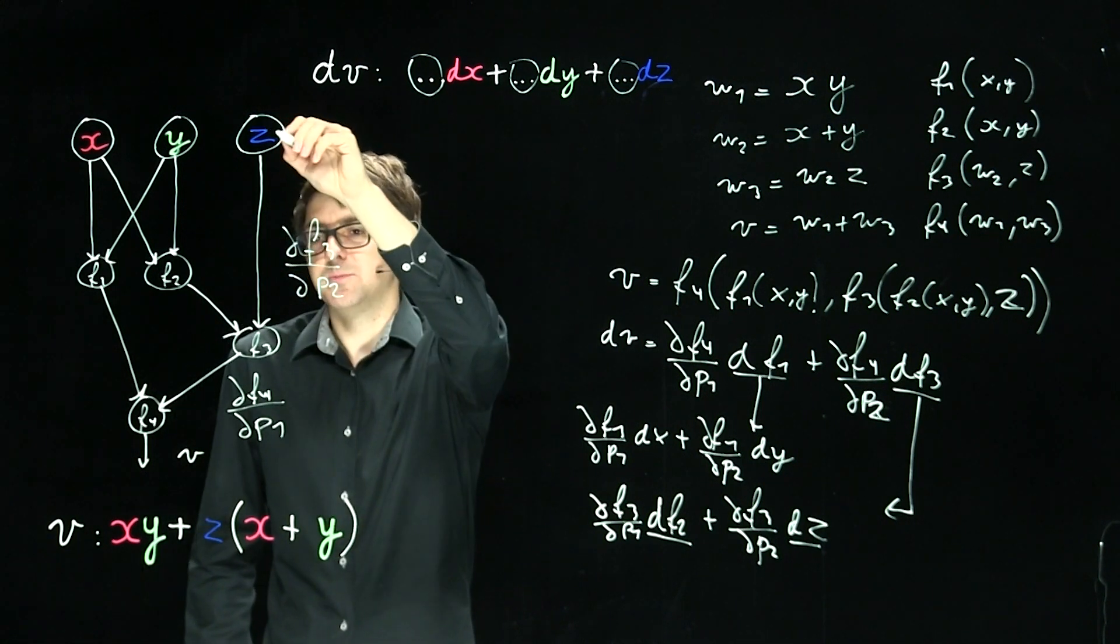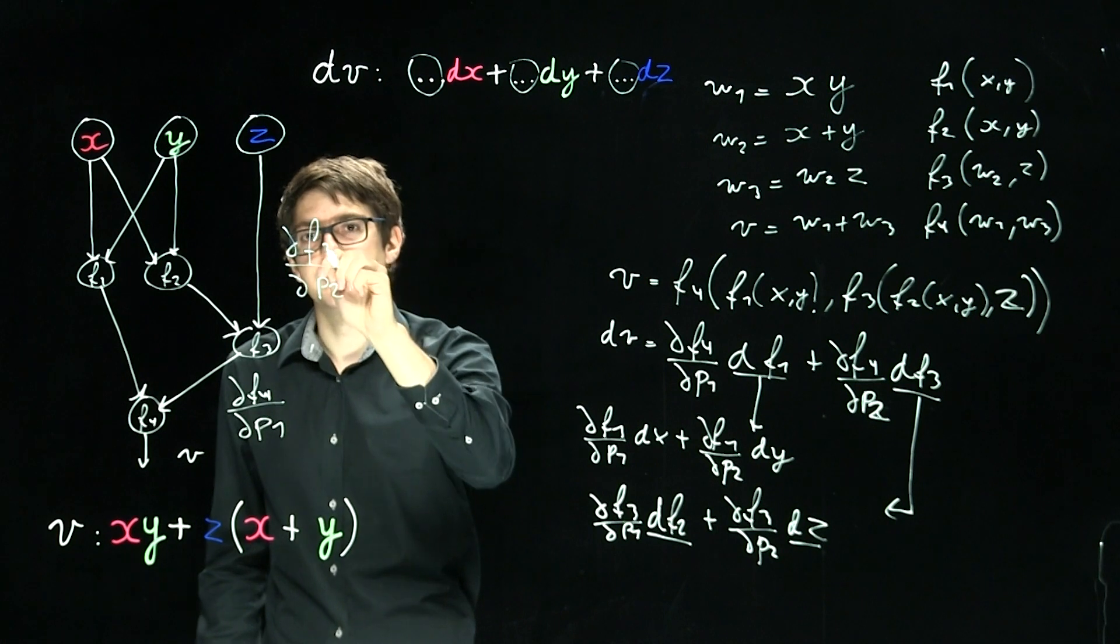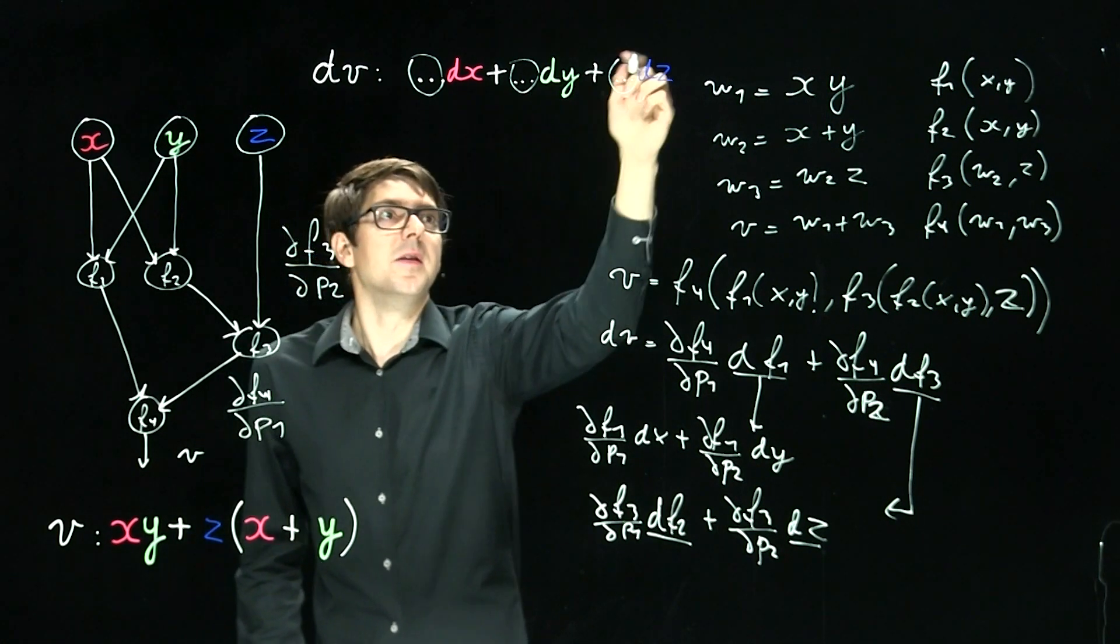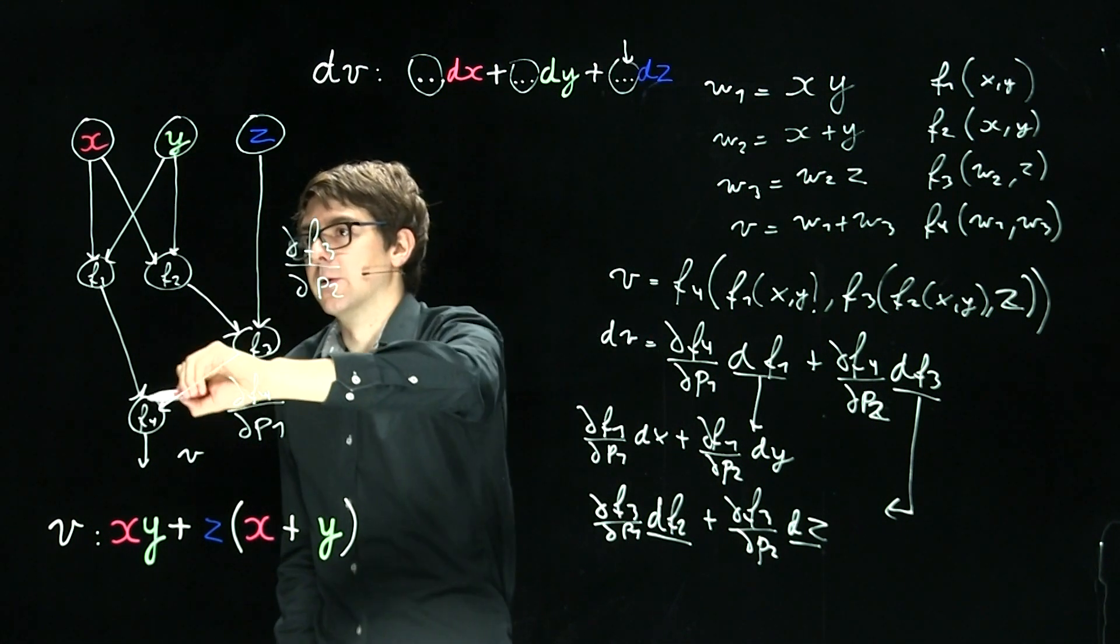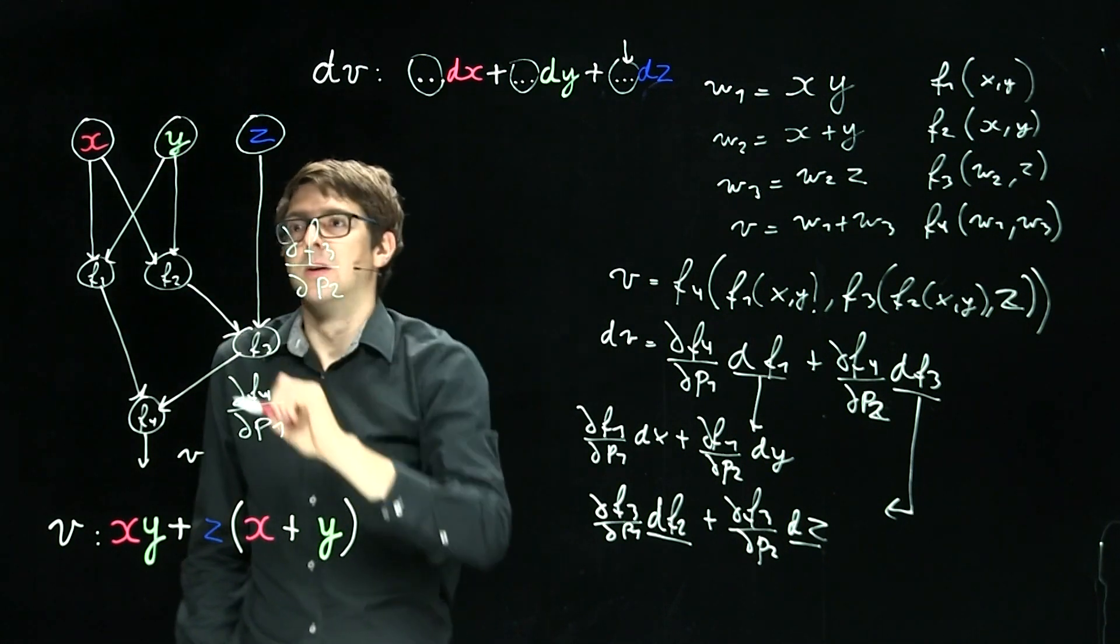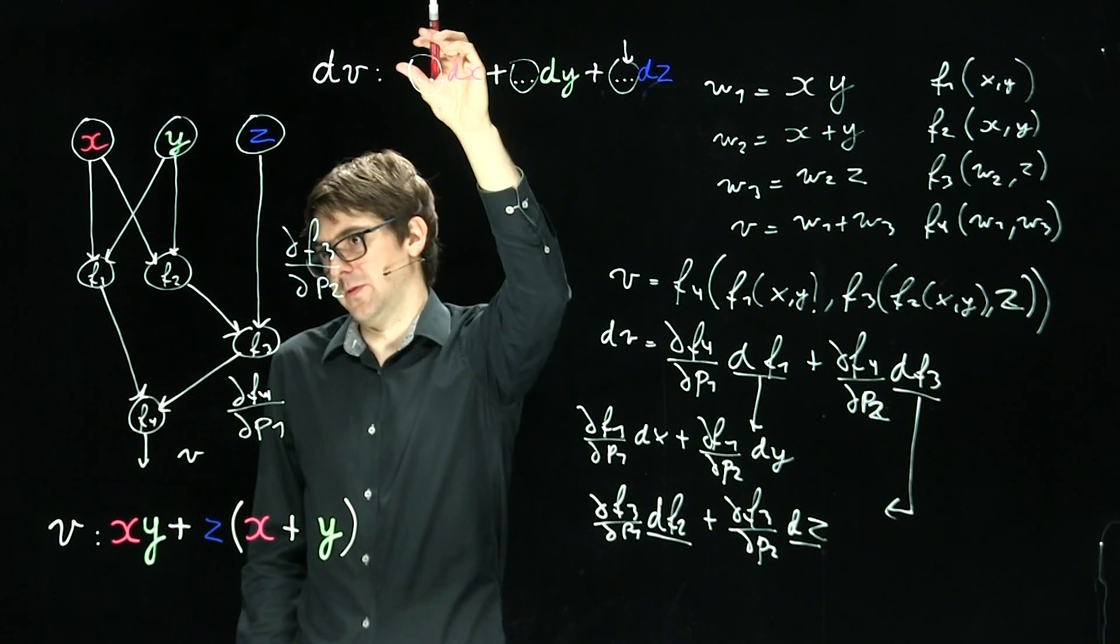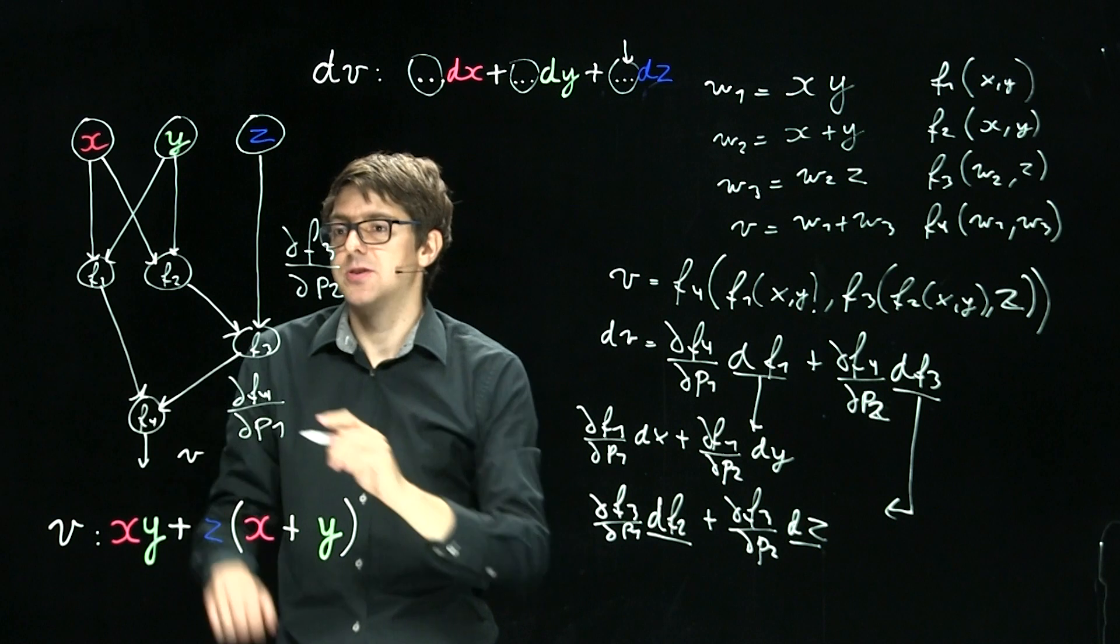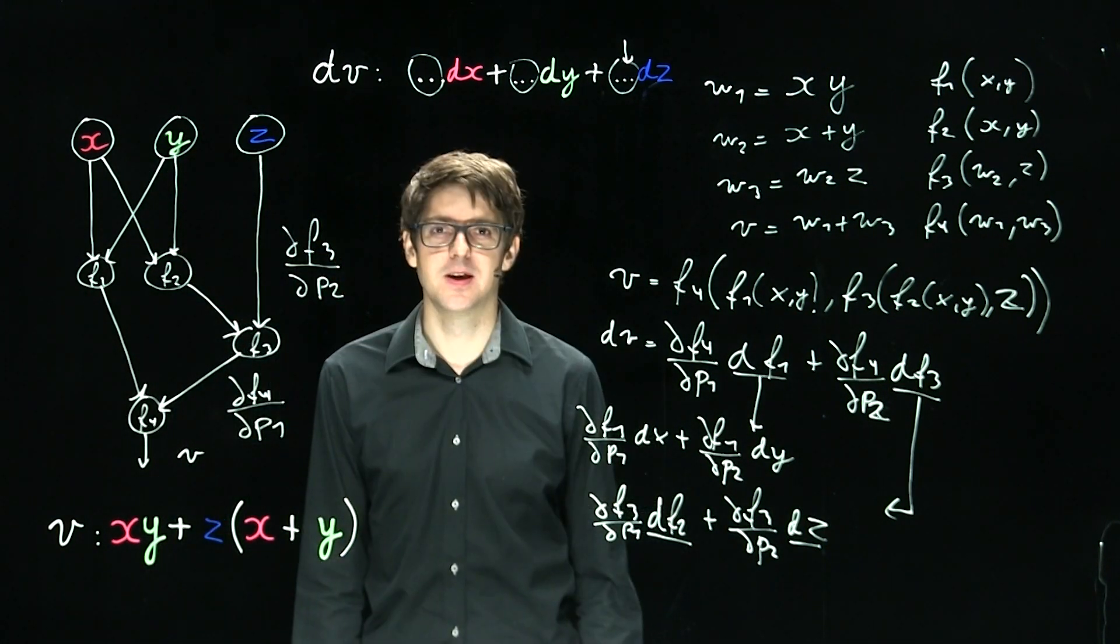So for dz we will simply have w4p1 times partial of f3 with respect to p2. That will be here. For x we can go two routes. So it's this plus this. So concretely we will have a sum of products. First product this edge times this edge. Second product this, this, this. Okay.